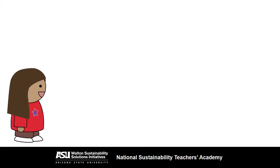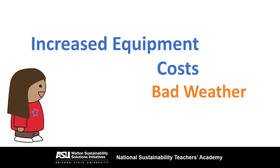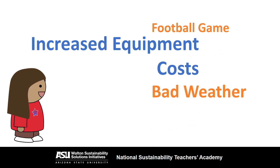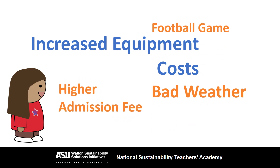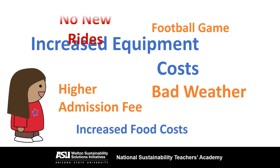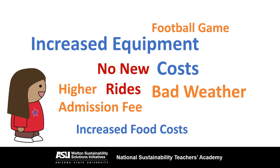So let's review all the factors that contributed to our problem: bad weather, increased equipment costs, a football game on the same day, a higher admission fee, increased food costs, no new rides, and no popular bands. It seems impossible to figure out how to fix such a complicated problem — that's why I'm using a fishbone diagram to analyze it.